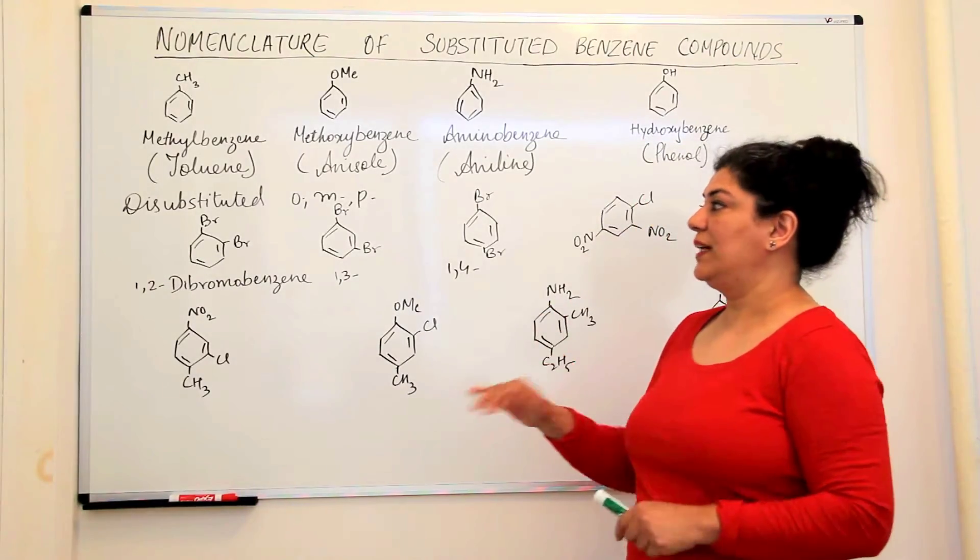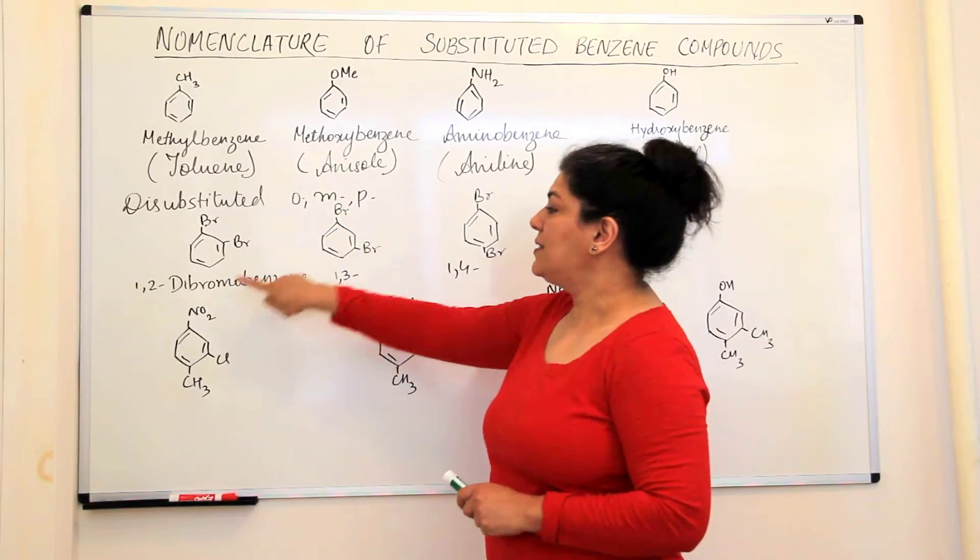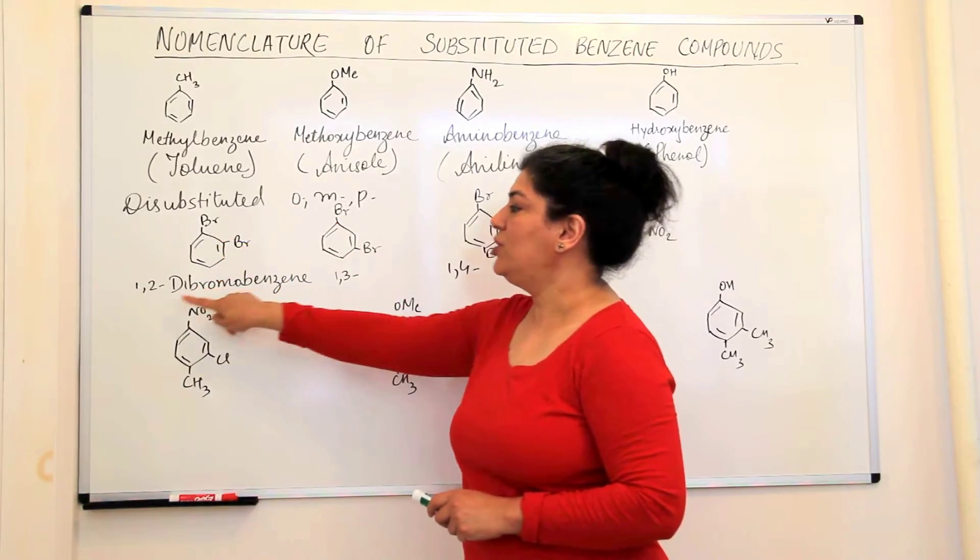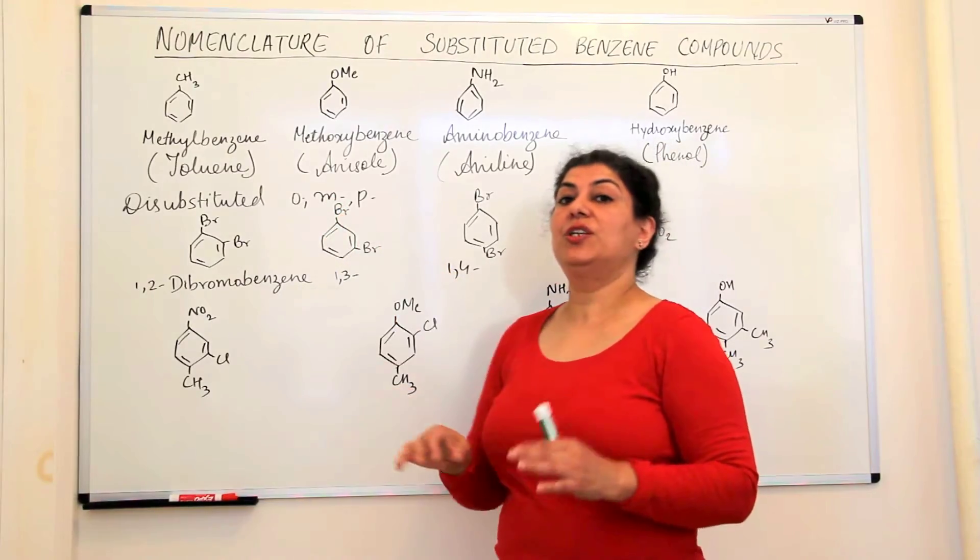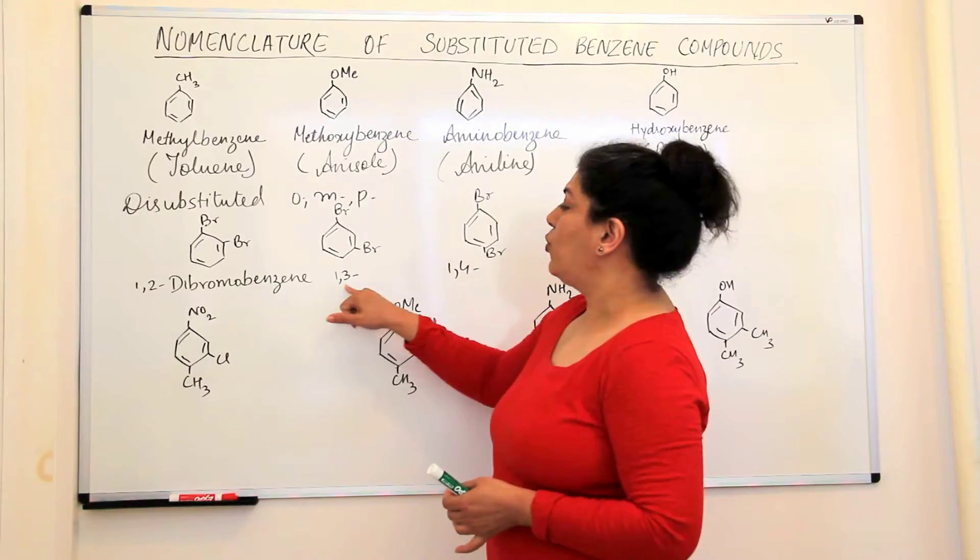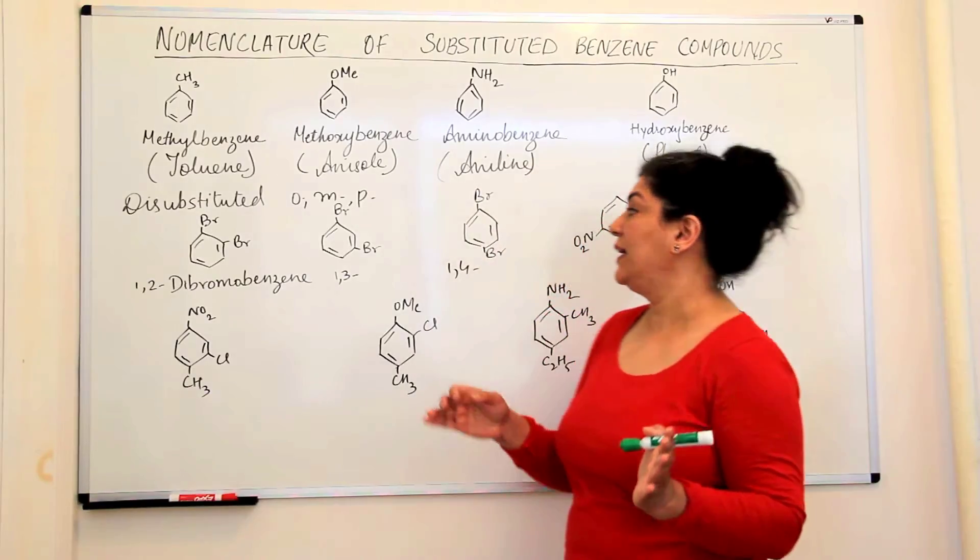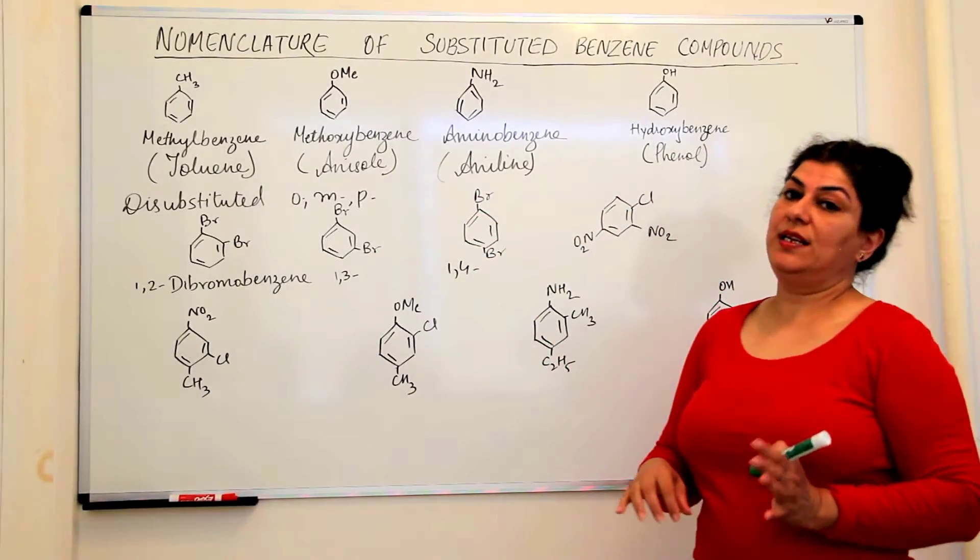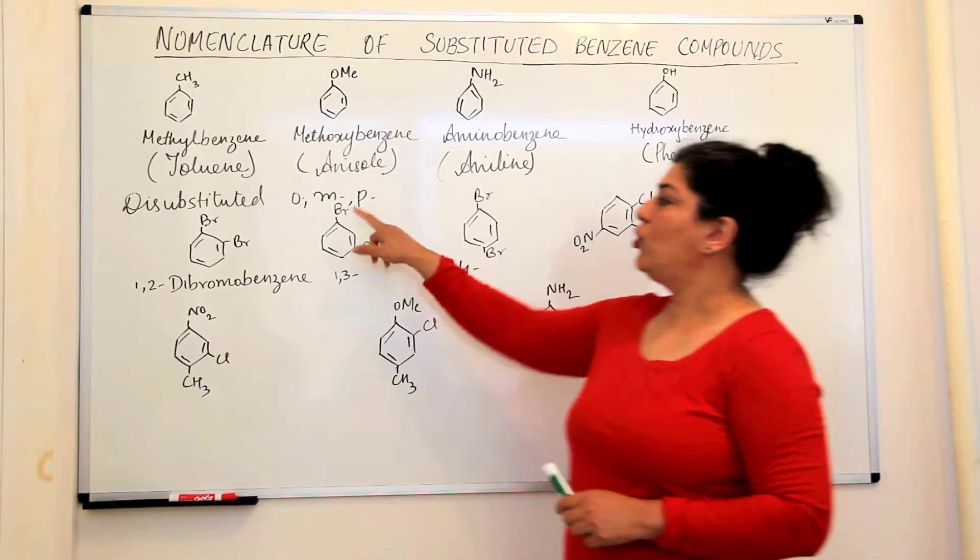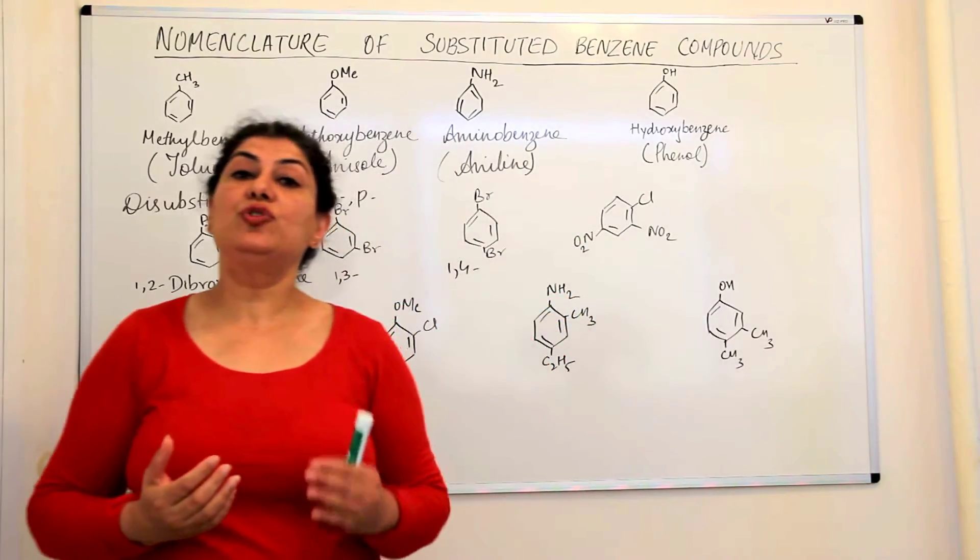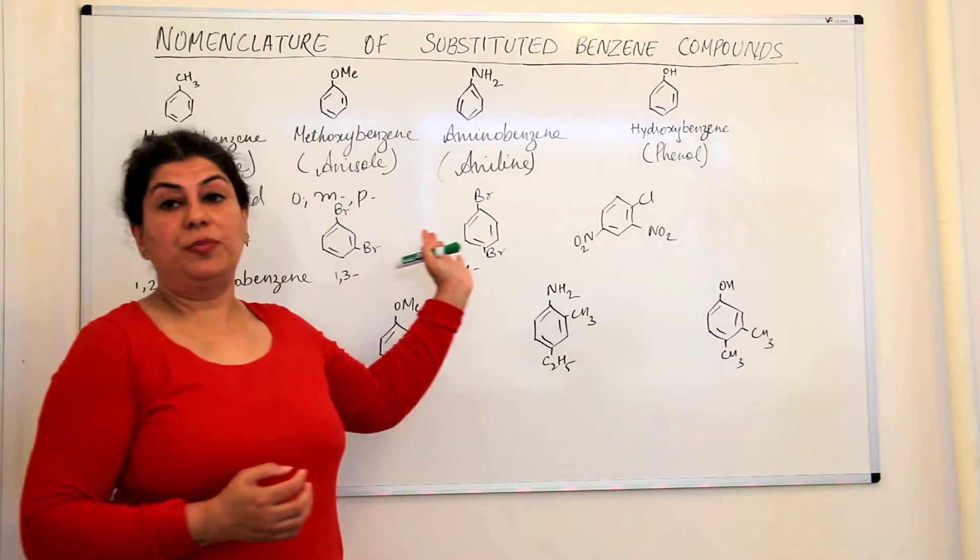In the common nomenclature, these positions have been given these expressions. This is known as ortho, one, two, di-bromo benzene is known as ortho-di-bromo benzene. The one, three position is known as the meta position. So, one, three, di-bromo benzene would be called meta-di-bromo benzene in common nomenclature, not in IUPAC nomenclature. And one, four, di-bromo benzene would be para-di-bromo benzene. Now, remember the ortho, meta and para are expressions which are used for di-substituted benzenes. If the benzene is tri-substituted, then these do not make any sense.